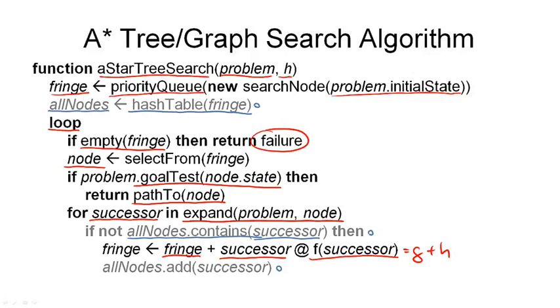We add it to the fringe as our new successor at its current F value, and we also have to add it to the set of all the nodes we have seen before so that we don't explore this node again. So this is a working version of the graph search algorithm.